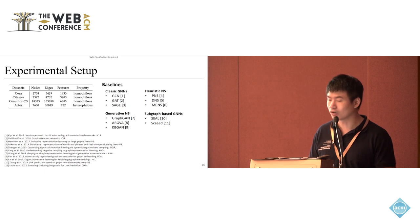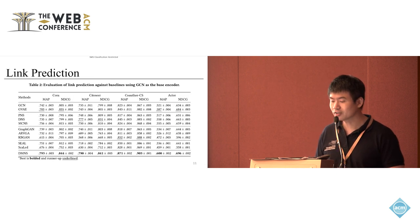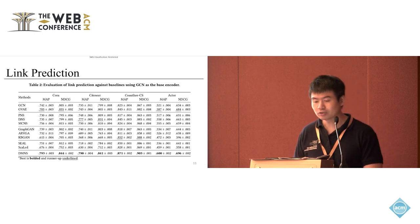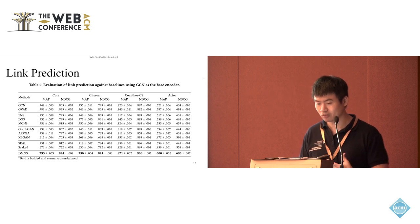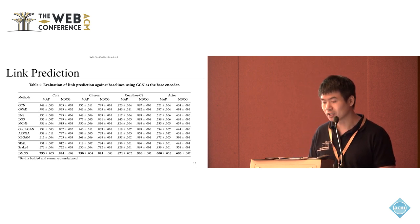We also consider some other link prediction approaches like subgraph-based methods like CO and SCALE. Here is the overall performance. As we can see, our method has the best performance consistently across different datasets on different metrics.